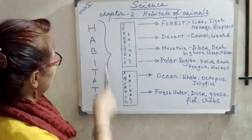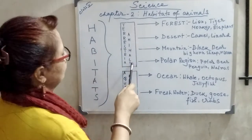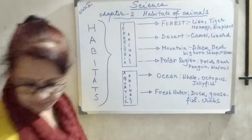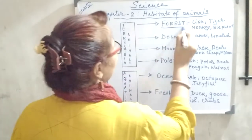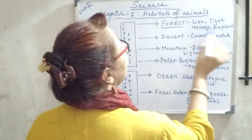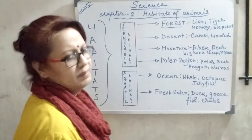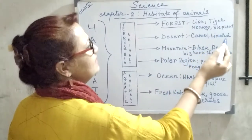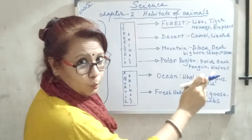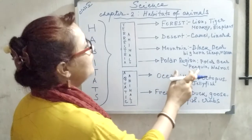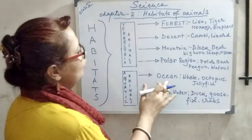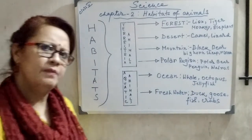You can see here a concept map. Habitats are divided into terrestrial and aquatic habitats. In forests, animals like lion, tiger, monkey, and elephant live. In deserts, camel and lizards are found. In mountains, blackbear, bighorn sheep, and dracon live. In polar regions, polar bears, penguin, walrus, and seals are found. In the ocean, whale, octopus, jellyfish, and many types of marine fish are found.